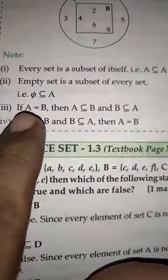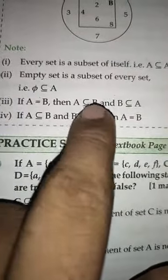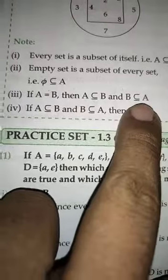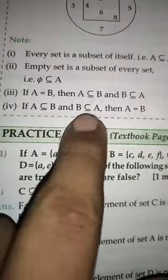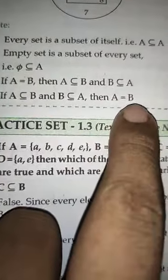Second, if two sets are equal, then they are subset of each other. A subset of B, B subset of A. Or if A subset of B and B subset of A, then the third point is A equals B.